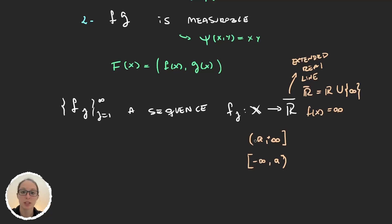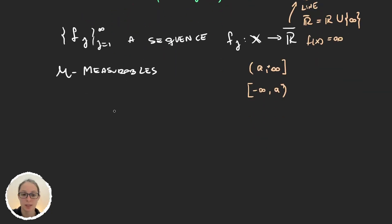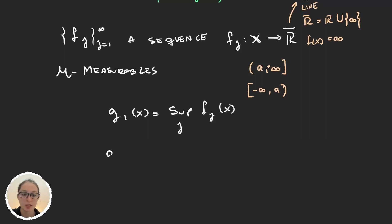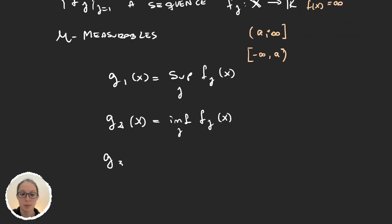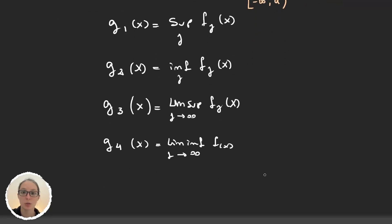Whenever we want to test if a function is measurable and the function is defined on the extended real line, we have to check it for these types of sets. So, what's the result? Well, we have a sequence of measurable functions. Then, defining g1(x) as the supremum over j of f_j(x), g2 as the infimum, g3 as the upper limit, and g4 as the lower limit — all four are measurable.